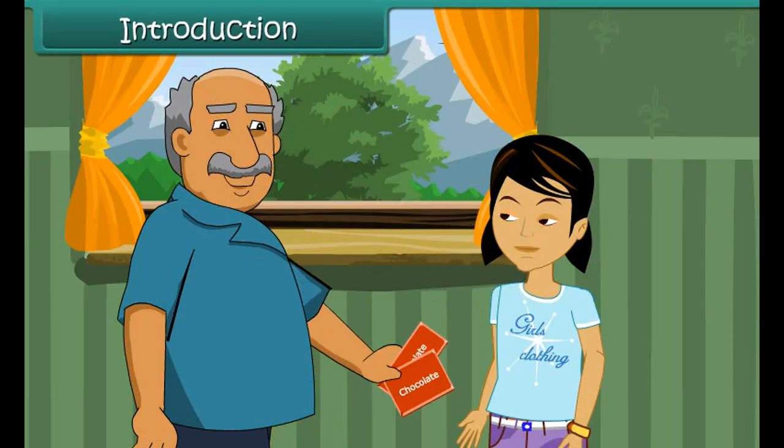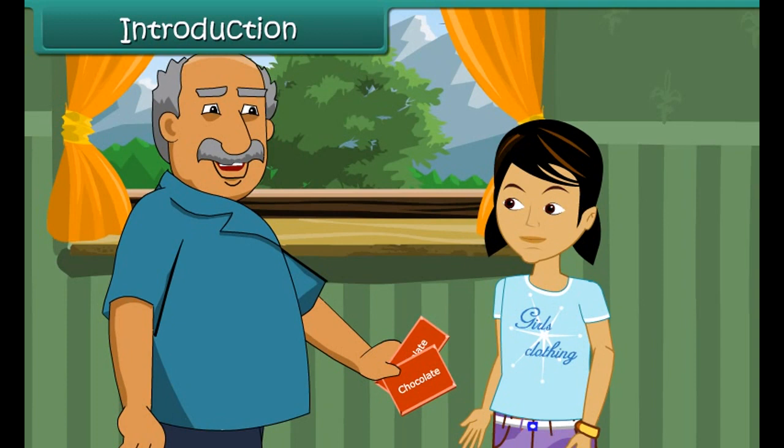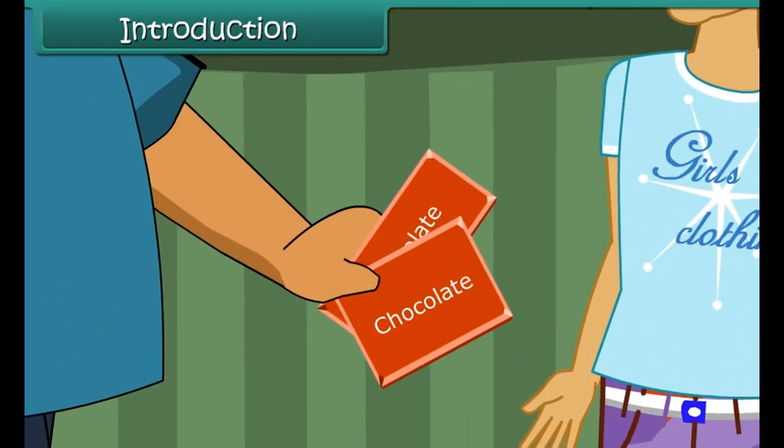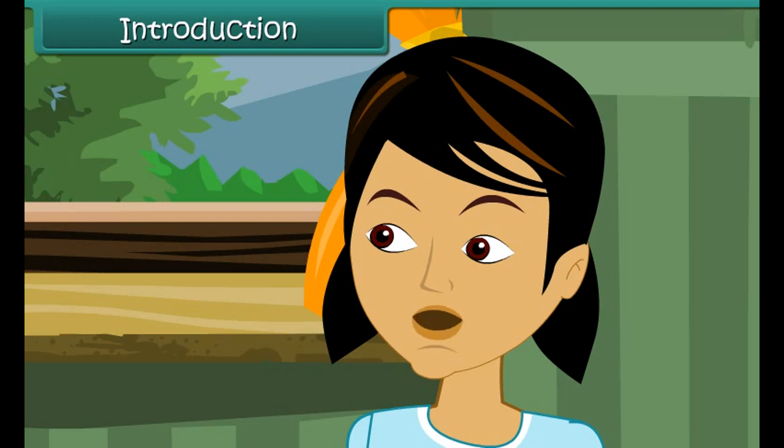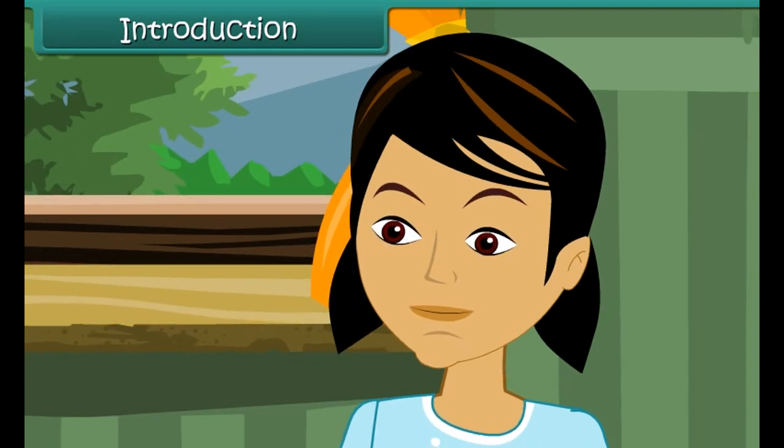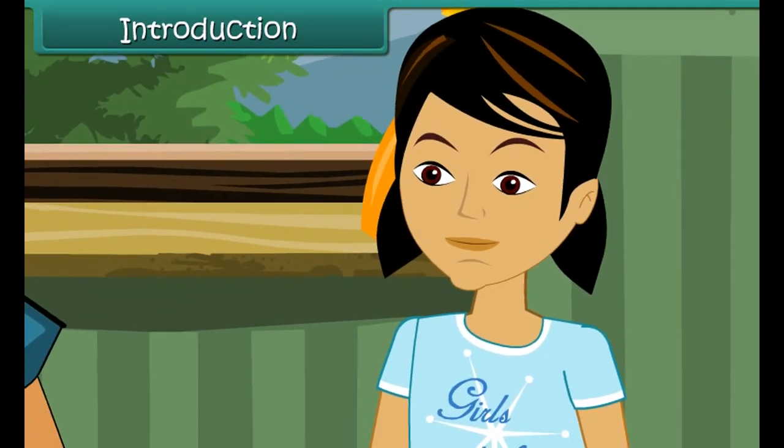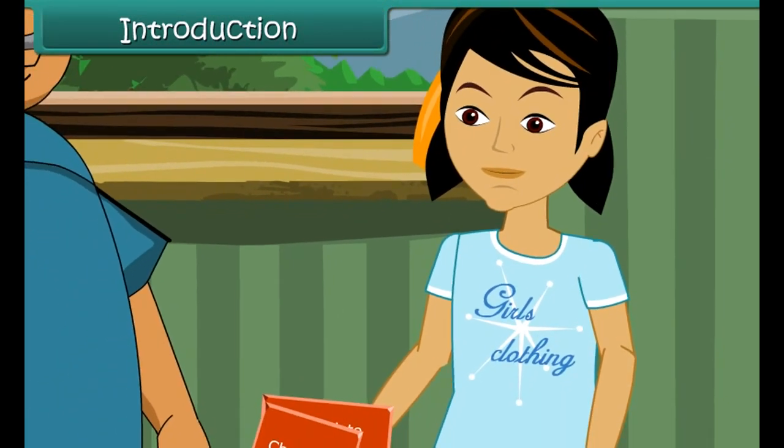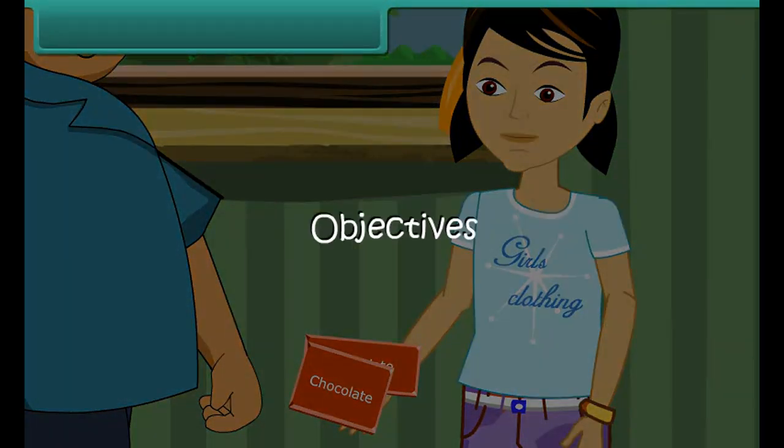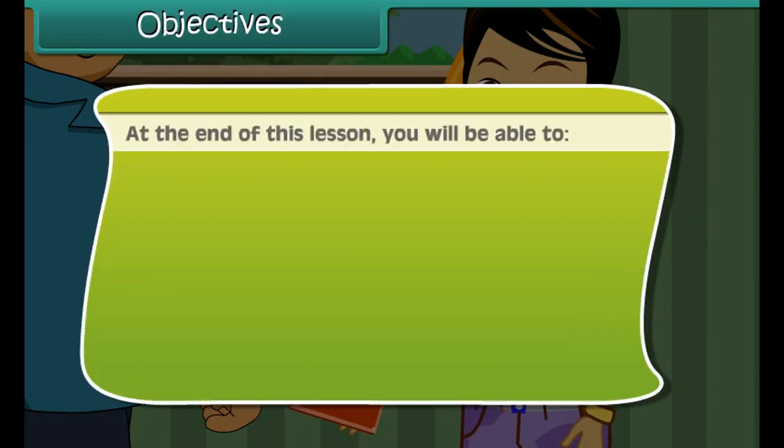One day Sonia's uncle gave two chocolates to Sonia and said, the bigger chocolate is for you and the smaller one is for your younger brother. Sonia could not make out which of the two chocolates was bigger. Which chocolate should I eat and which one should I give to Rohan? Friends, can you help Sonia in deciding which chocolate is bigger and which one is smaller? Come, let us find together the answers of such questions in the lesson Area and Perimeter.